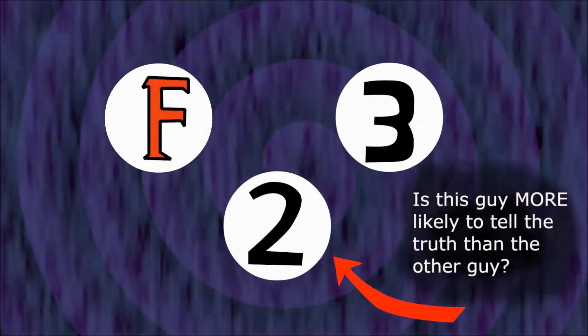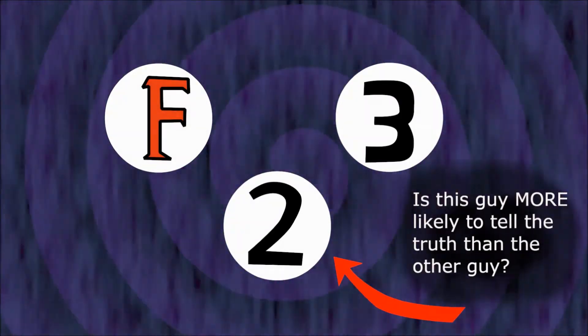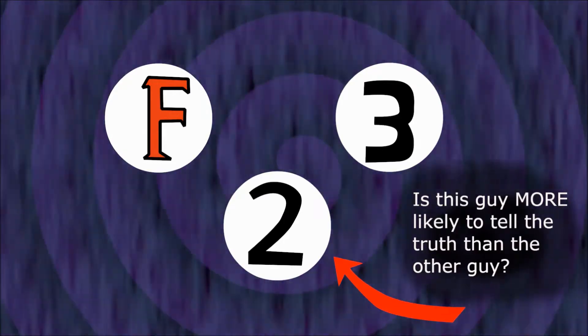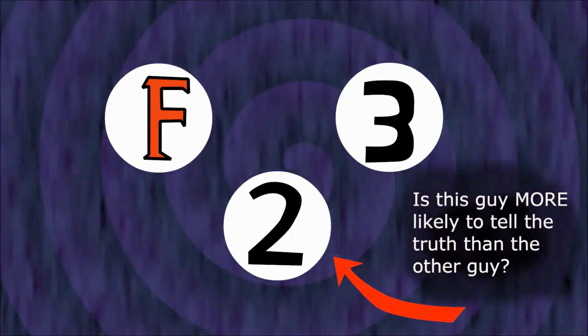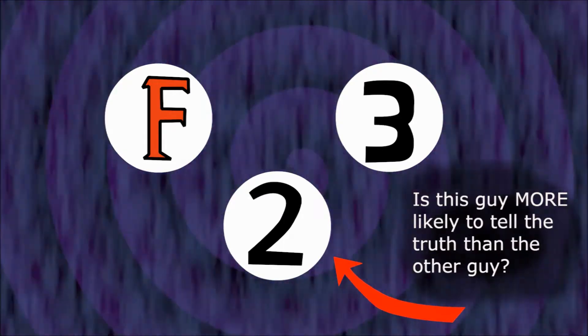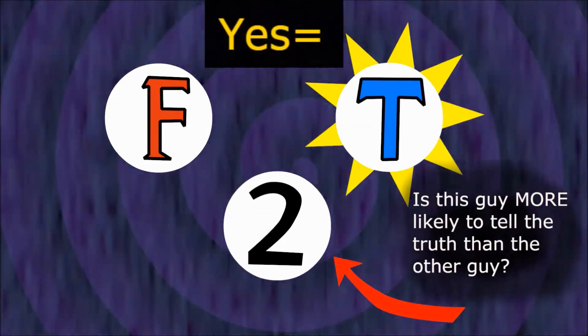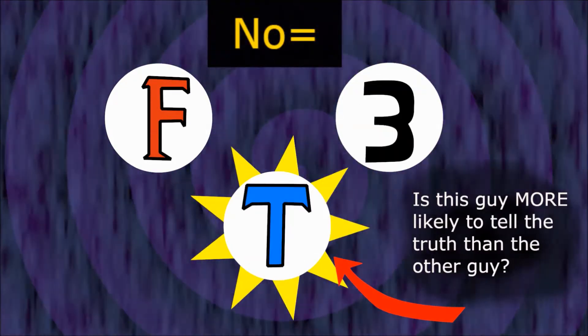Suppose prophet one was False. You ask him, 'Is prophet two more likely to tell the truth than prophet three?' For False, Truth will be less likely to tell the truth than Random, because he's lying. So yes means you should talk to prophet three, and no means you should talk to prophet two.